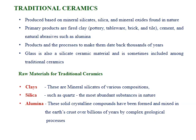First, let us take traditional ceramics. These are products produced based on mineral silicates, silica, and mineral oxides found in nature. Primary products are fired clay such as pottery, tableware, brick and tiles, cement, and natural abrasives such as alumina. Products and the processes to make them date back thousands of years. Glass is also a silicate ceramic material and is sometimes included among traditional ceramics.